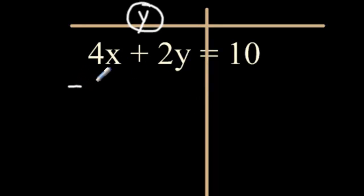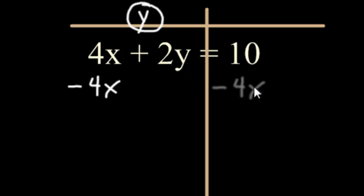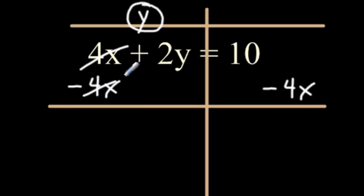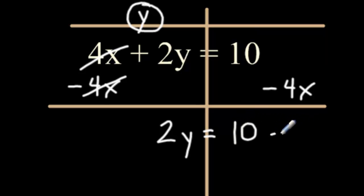The first step is to get rid of the 4x by subtracting 4x from both sides. Since the 10 and the negative 4x are not like terms, just put it aside and start a new line. 4x minus 4x cancels out. The 2y drops down, equals the 10 we didn't touch, that drops down, and so does the negative 4x.